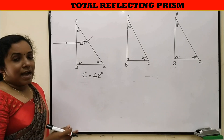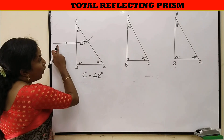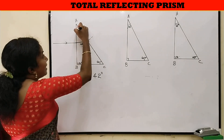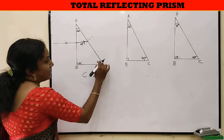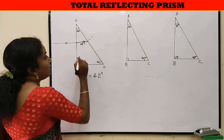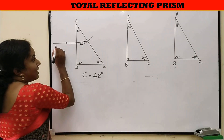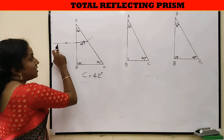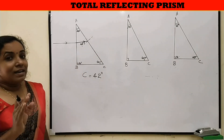Here is a useful tip: if the ray of light falls normally to the first surface, on reaching the other surface, the angle of incidence equals the refracting angle — that is, the angle between the refracting faces AB and AC, which is 45 degrees. This rule applies only when the ray of light is normal to the first surface of the prism.